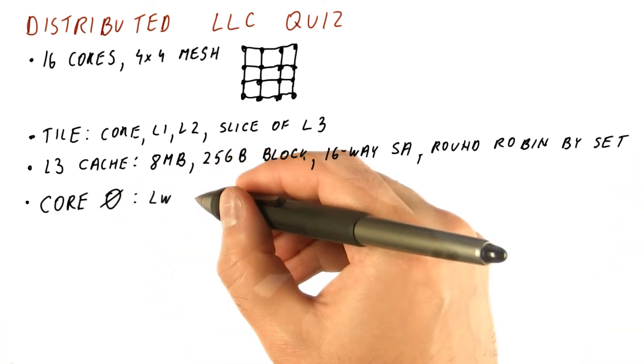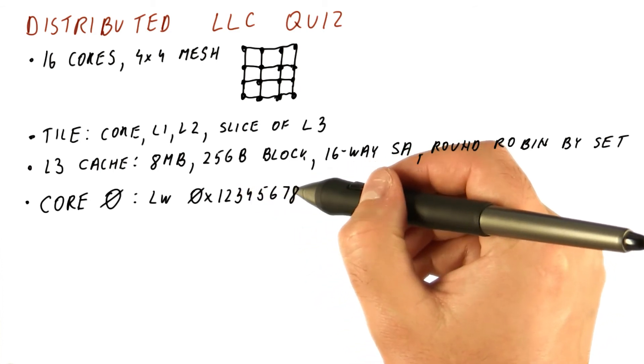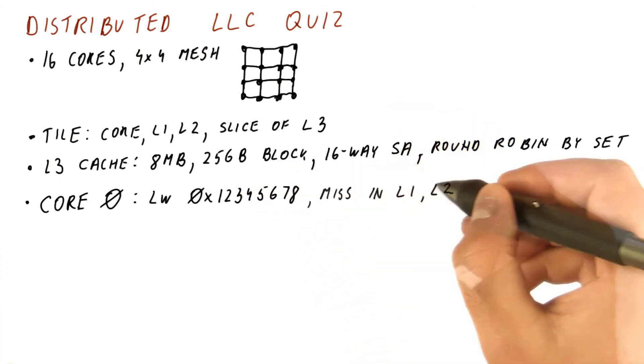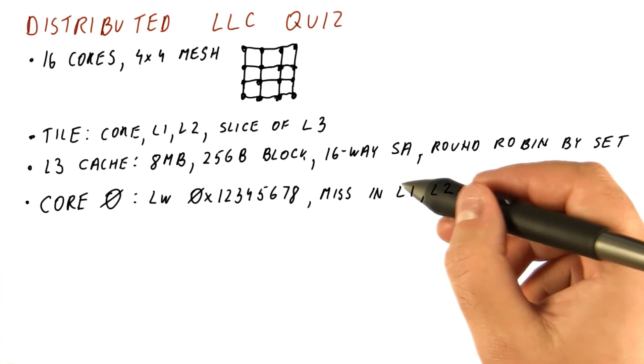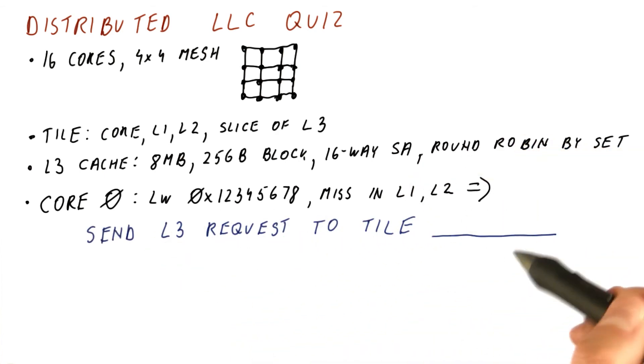If core zero issues a load from address 0x12345678 hex, and if this load is a miss in level one and in level two, we send the level three request to what tile?